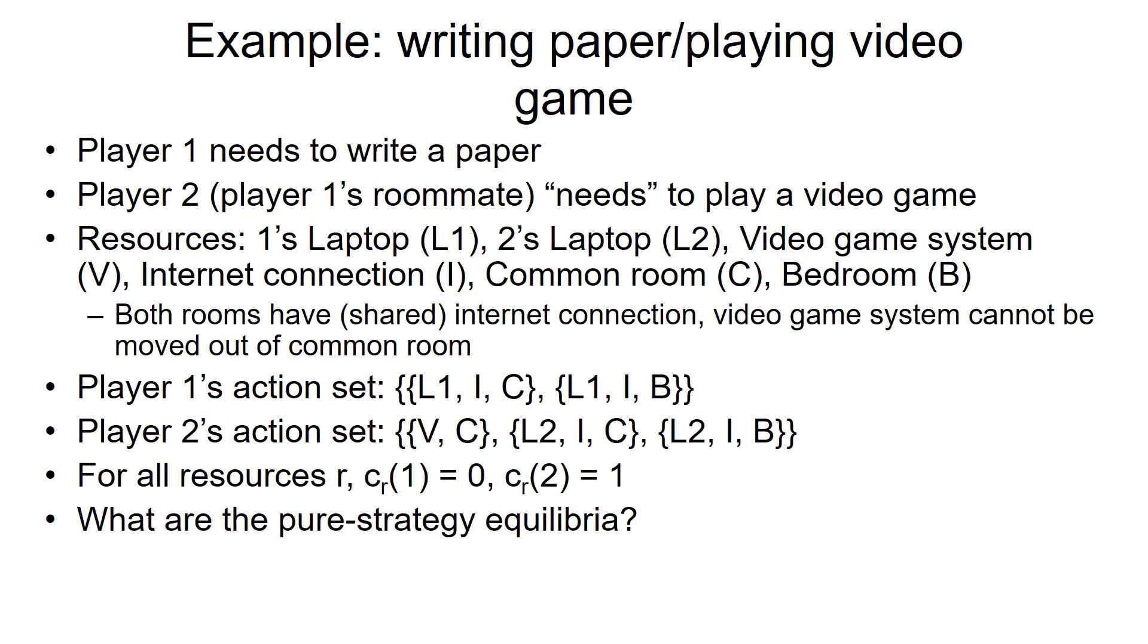It looks like (V, C) will lead to zero cost for player 2. The other two have a common resource with player 1. Given (V, C) is the best strategy for player 2, it looks like player 1 can use {L1, I, B}, then it will become a mutually exclusive list of resources that will also lead to zero cost for player 1.